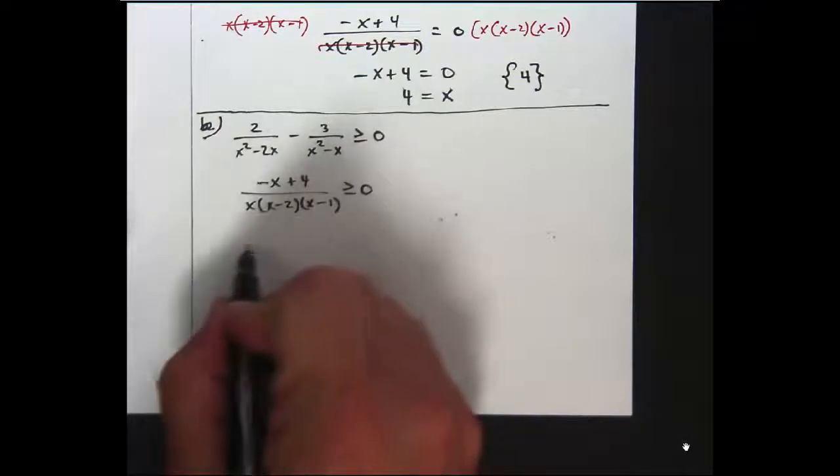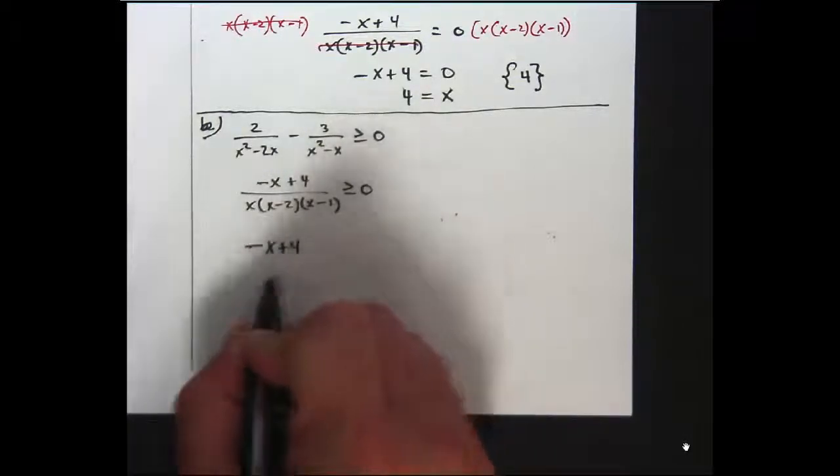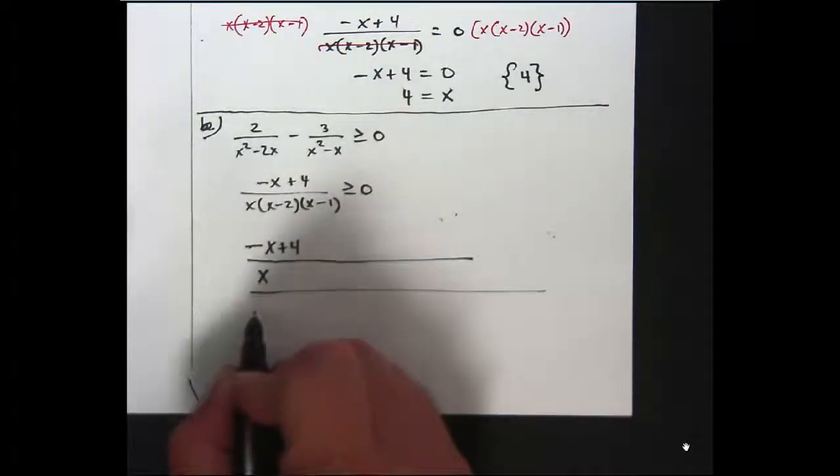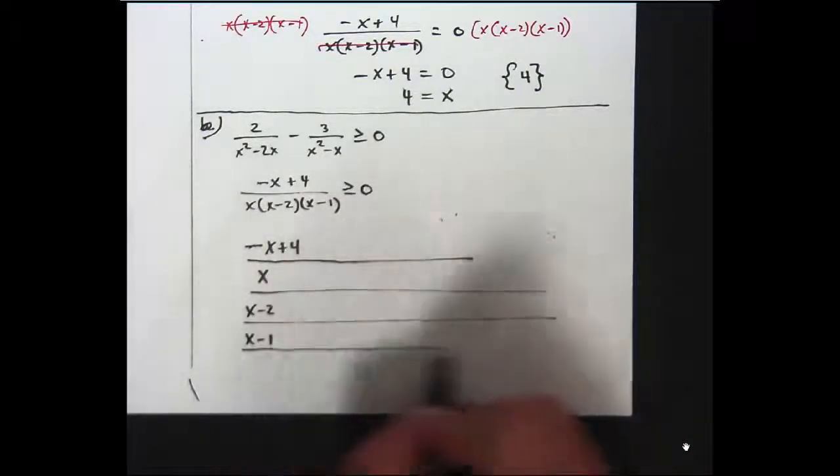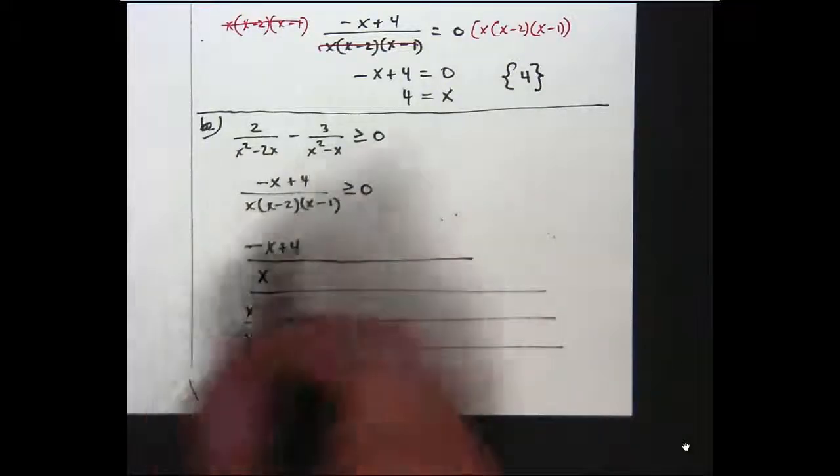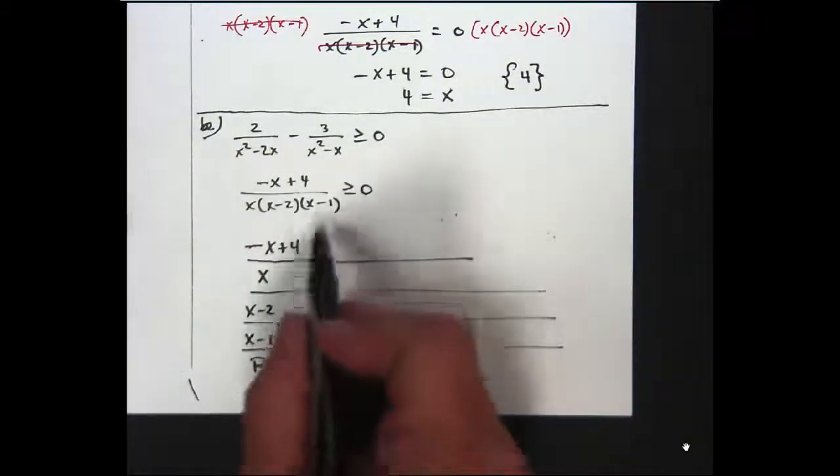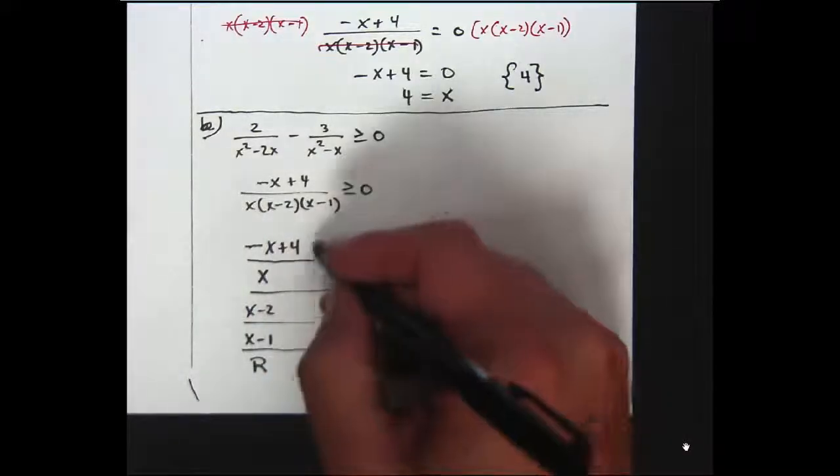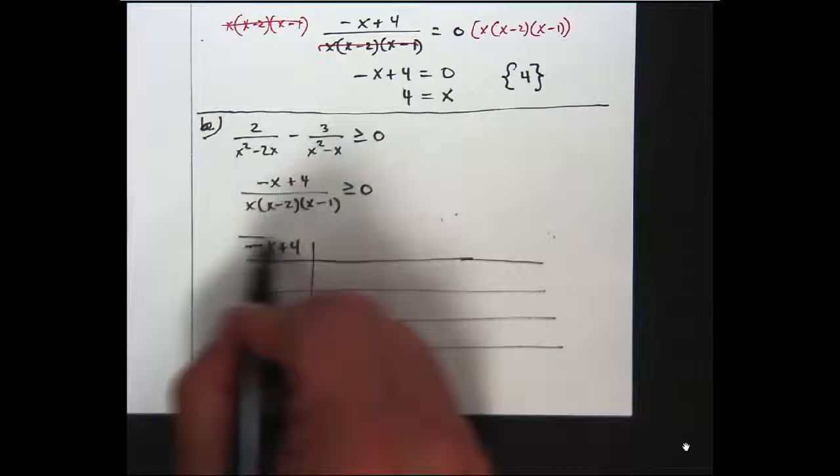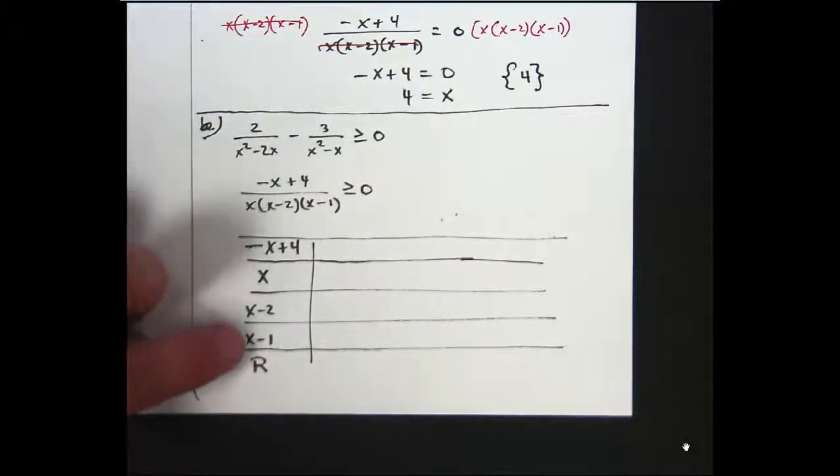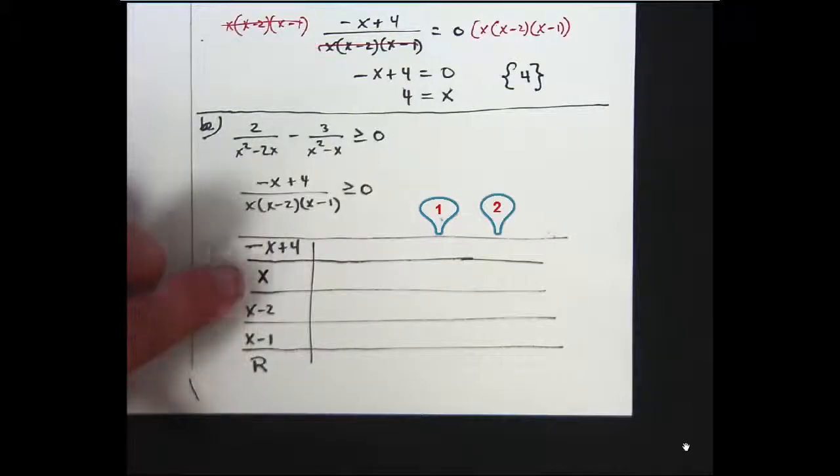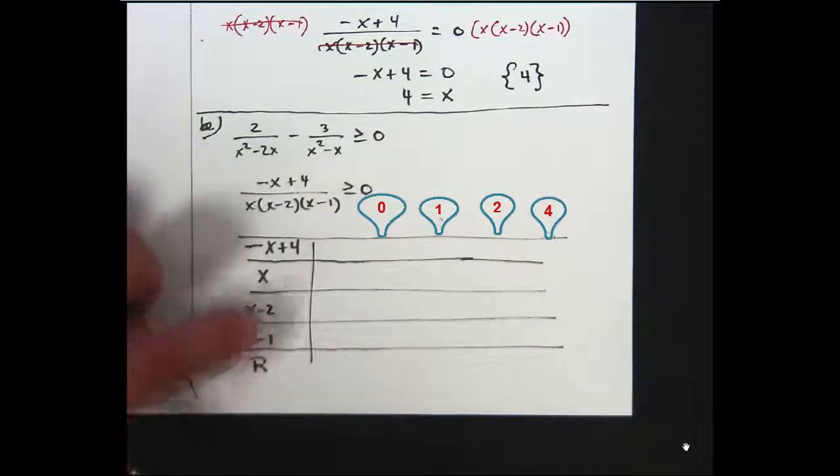And then this is something you could solve very easily with a sign chart. A sign chart here would be negative x plus 4, that's the factor in the numerator, x, x minus 2, and x minus 1. This is a very complicated problem in that it has four different factors that affect this result. But all those techniques we went over today, they still work. You just find the zeros of each. What makes that zero? And that, and that, zero. And this one would be four. So actually the zeros are zero, one, two, and four.